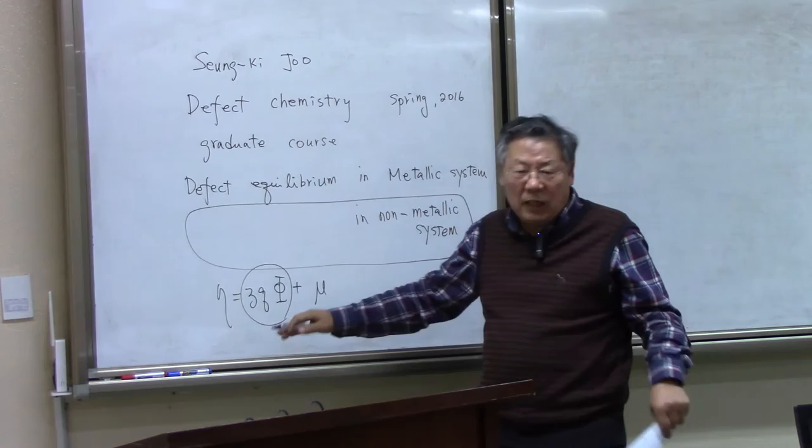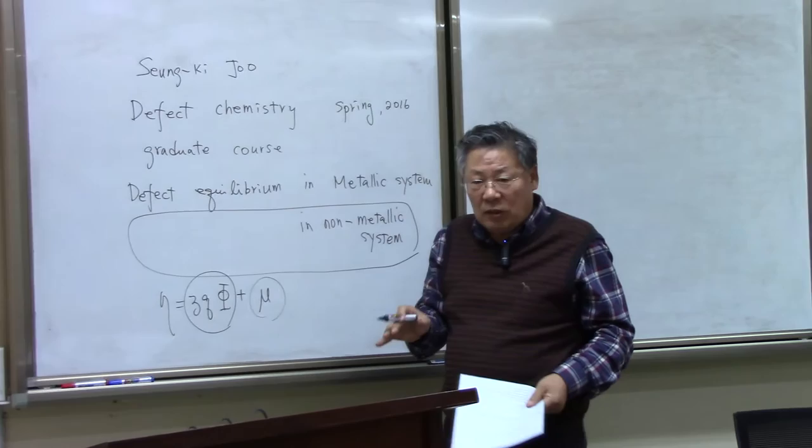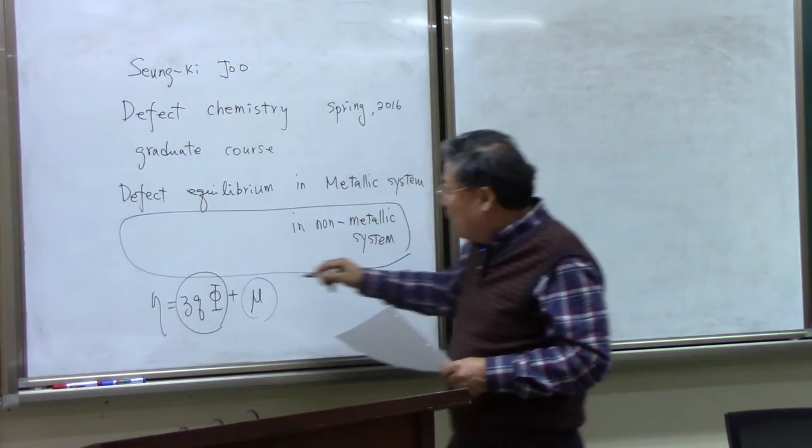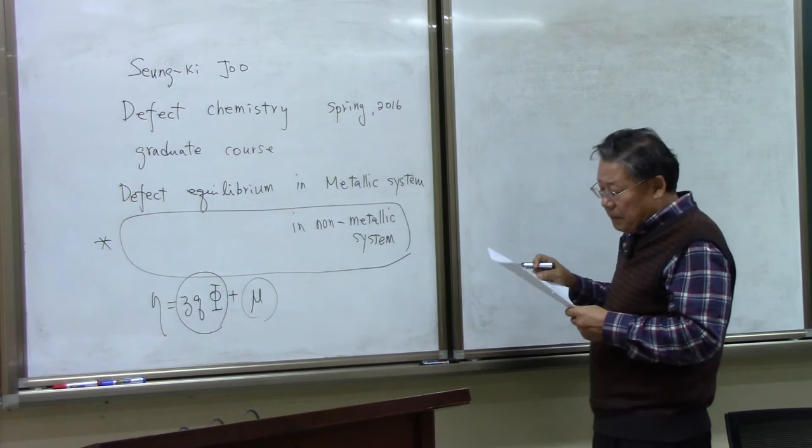It has so many free electrons, so in the metallic system the chemical potential is the only thing that we have to consider. But in a non-metallic system, these two electrochemical potentials should be involved in the system, so we are going to focus on the defect equilibrium in a non-metallic system.